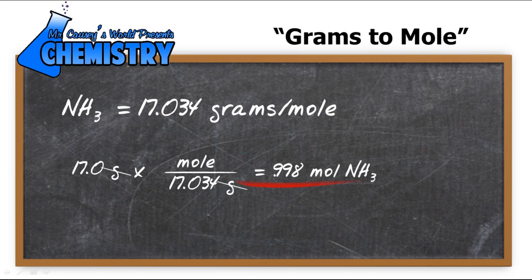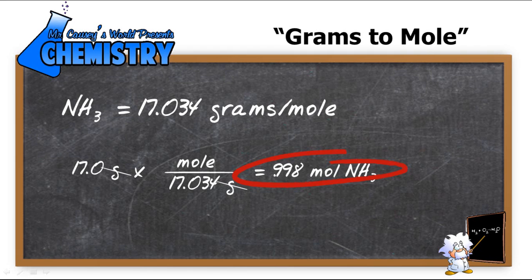And plug and chug, and we get 0.998 moles of ammonia. Now, we can take that and put that in the equation for N.